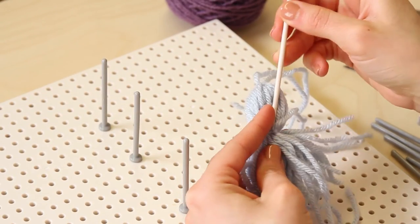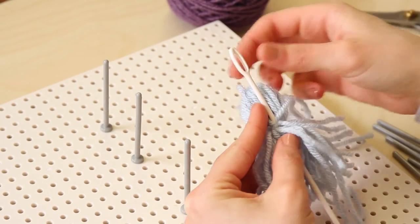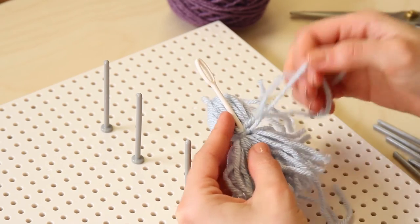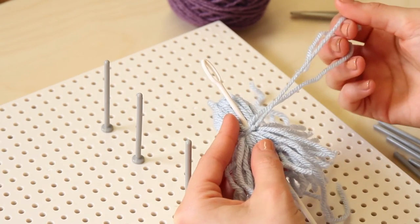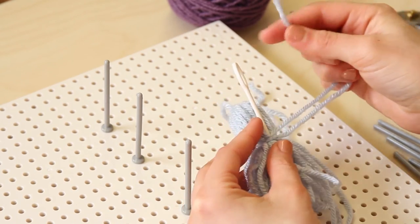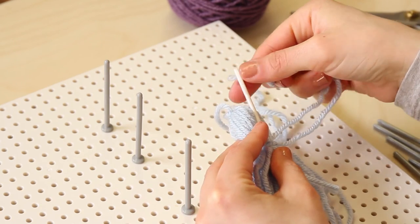Slide the needle weaver through the center of the tassel. Thread the necktie into the needle weaver and draw through to hide. You don't need to do this with the top tie. That's how you attach your tassel.